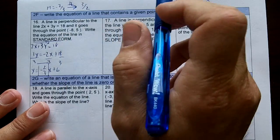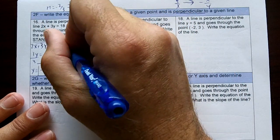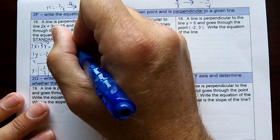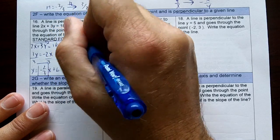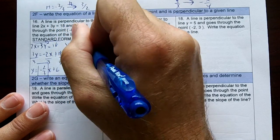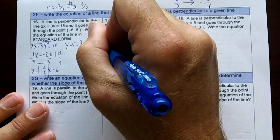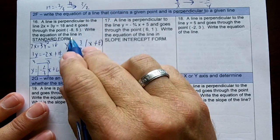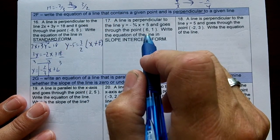So we're going to write down y minus 5 equals 3 over 2x, or 3 over 2 parentheses, x plus 8. So the y and the x change signs when you plug them into point slope.